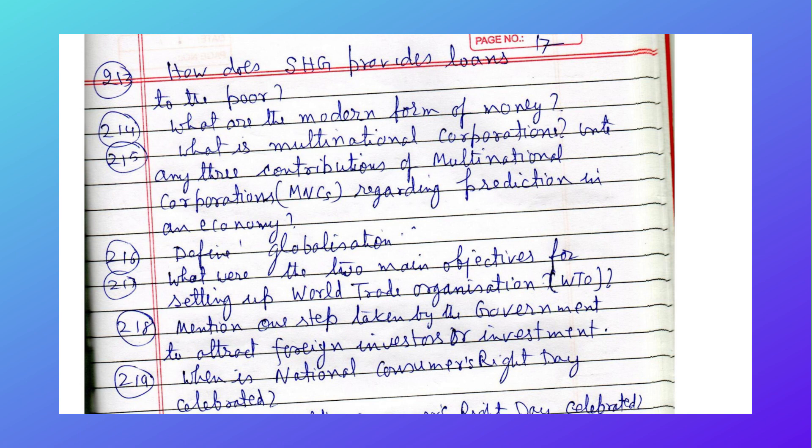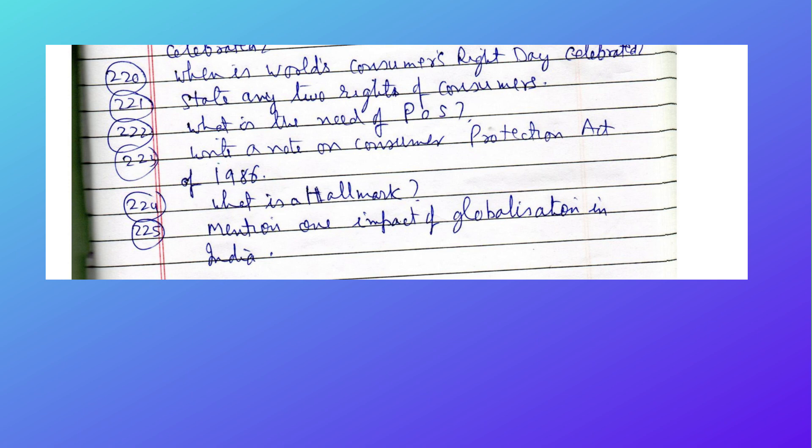What is a multinational corporation? Write any three contributions of MNCs to production in an economy. Define globalization. What were the two main objectives for setting up the World Trade Organization (WTO)? Mention one step taken by the government to attract foreign investment. When is National Consumer Rights Day celebrated? When is World Consumer Rights Day celebrated? State any two rights of the consumer. What is the need for POS? Write a note on the Consumer Protection Act of 1986. What is a hallmark?